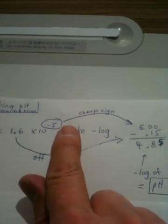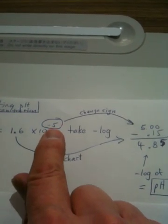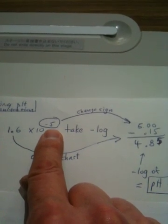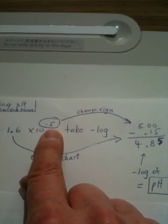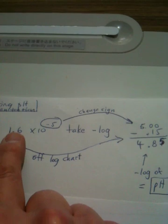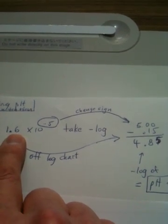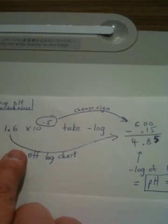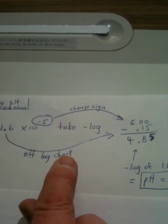That number there, or the minus log I should say, the minus log of 10 to the minus 5 is a 5, and that is the actual definition of a log. So right here, we now have to account for this number, which isn't just 1. So what we're going to do is go off of the log chart.